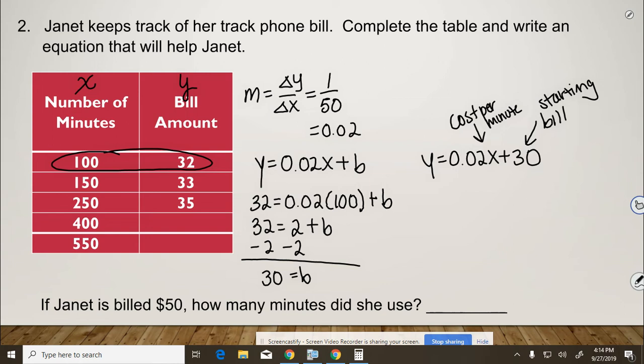Okay, so now we have to figure out the bottom part. It says if Janet is billed $50, how many minutes did she use? So we plug in that $50. But we've got to figure out where that goes. $50 is the bill amount, not the number of minutes. Bill amount is y, so we plug in 50 for y.